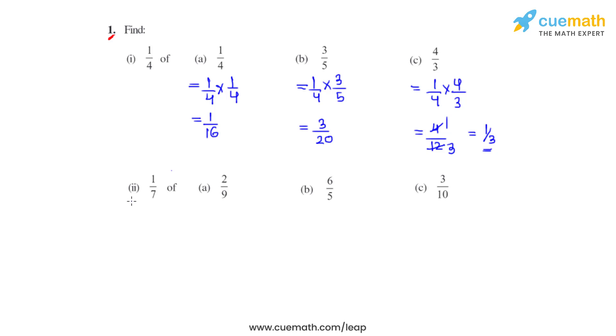Coming to the second set, we have to find 1/7 of 2/9. By the same fashion we write 1/7 times 2/9. Multiplying the numerators we get 2. Multiplying the denominators we get 63.